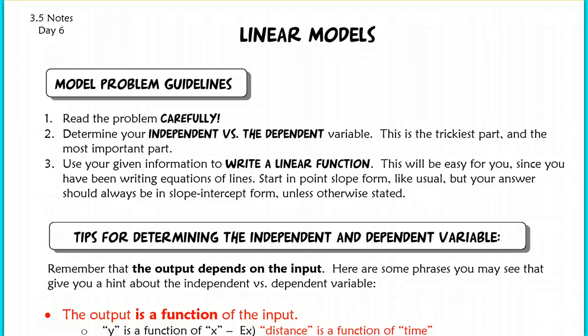Some guidelines here to start. Make sure you read the problem carefully. It kind of goes without saying. You want to make sure you understand what the problem is asking. And then pull the important pieces from the problem. You're going to be determining your independent and dependent variables. This is a pretty tough skill, I think, for a lot of students. You're going to get better at it as you practice it more, but you have to really pay attention to the phrasing and the terminology that are used so that you can figure out which variable depends on the other.